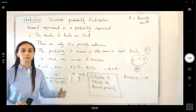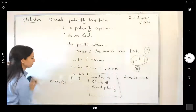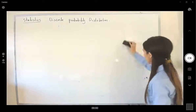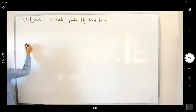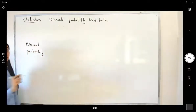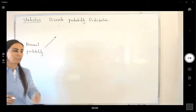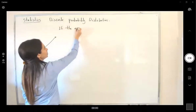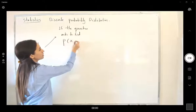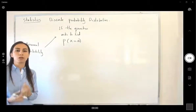There are different cases when it comes to calculating the binomial probability. If the question says find the probability of exactly one value — that is, find the probability that x equals a specific value — we are going to use our calculator and use binomial PDF.